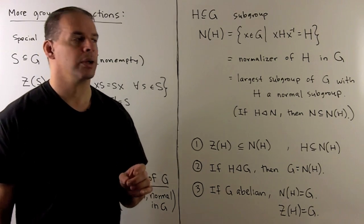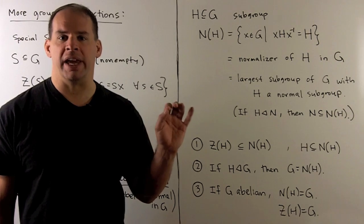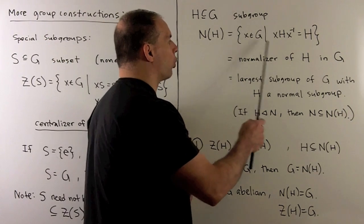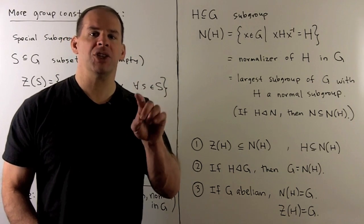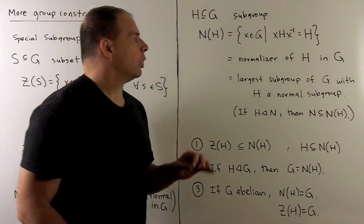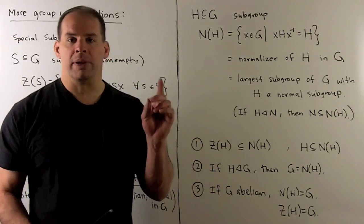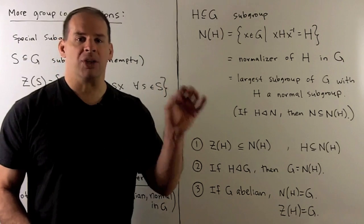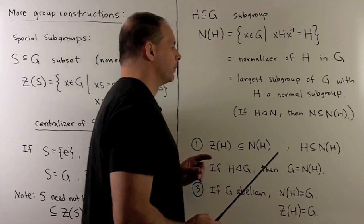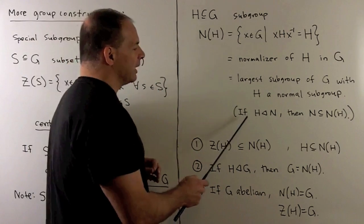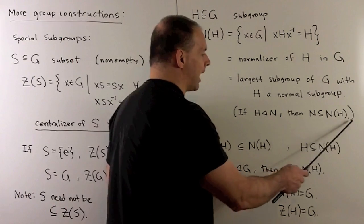For a similar construction, we'll fix a subgroup H in G. We'll define the normalizer of H in G to be the set of all X in G that normalize H. That just means if I conjugate the subgroup H by X, we get H back. The normalizer of H in G is the largest subgroup of G that contains H as a normal subgroup.